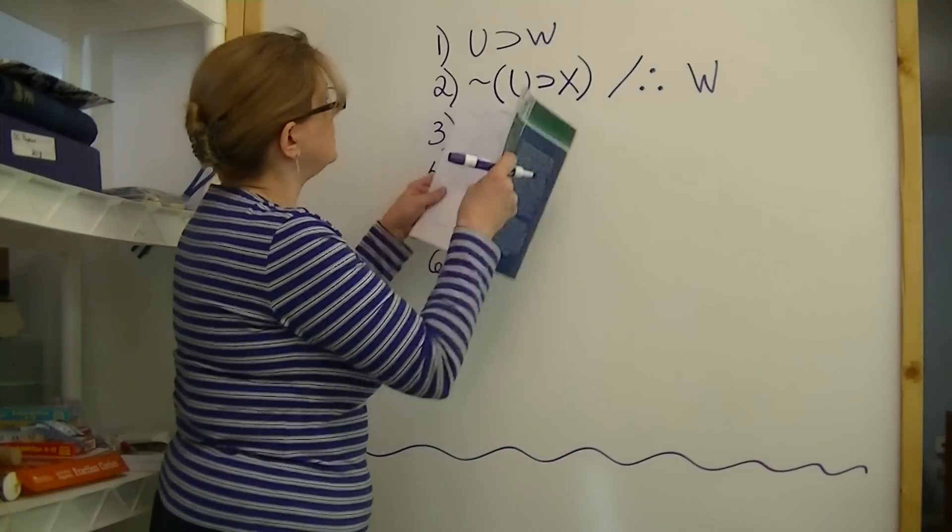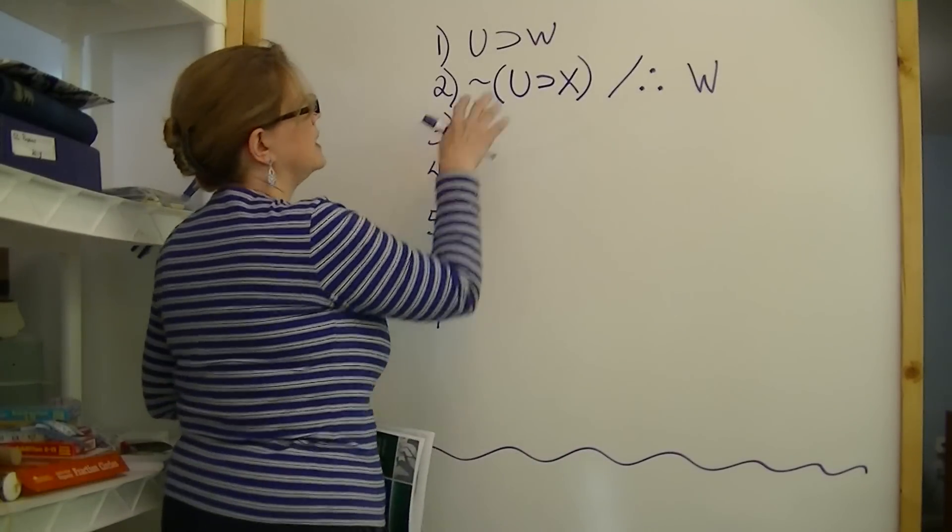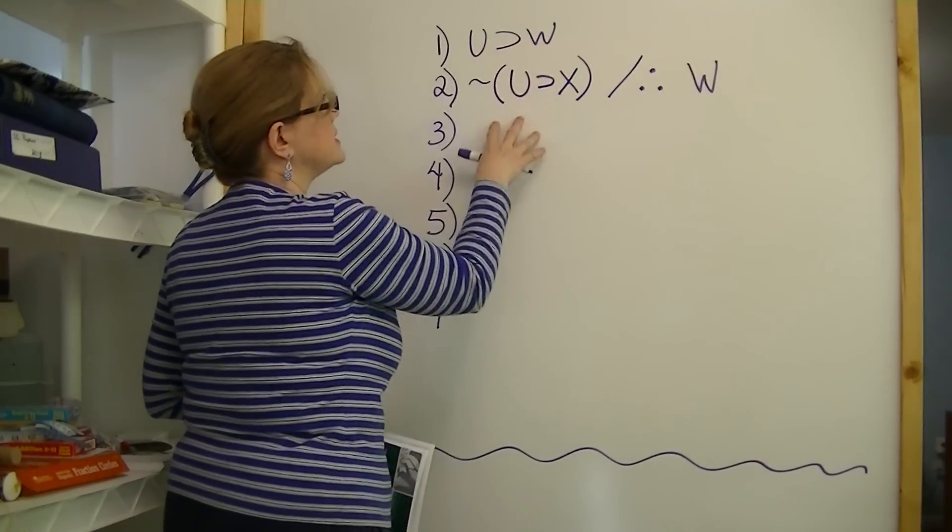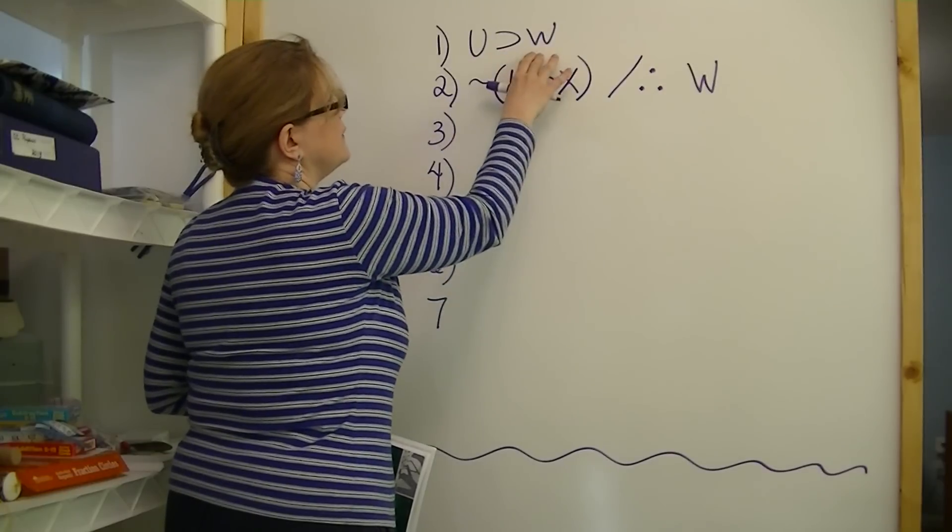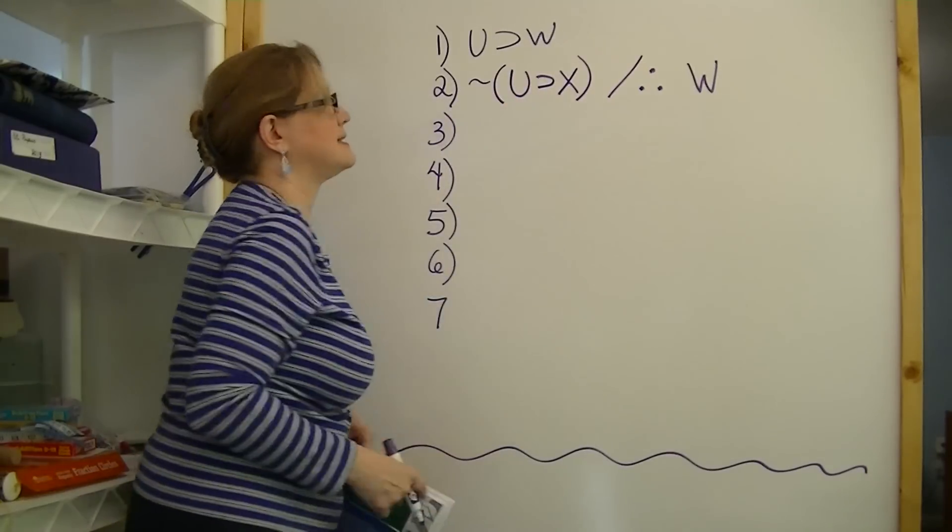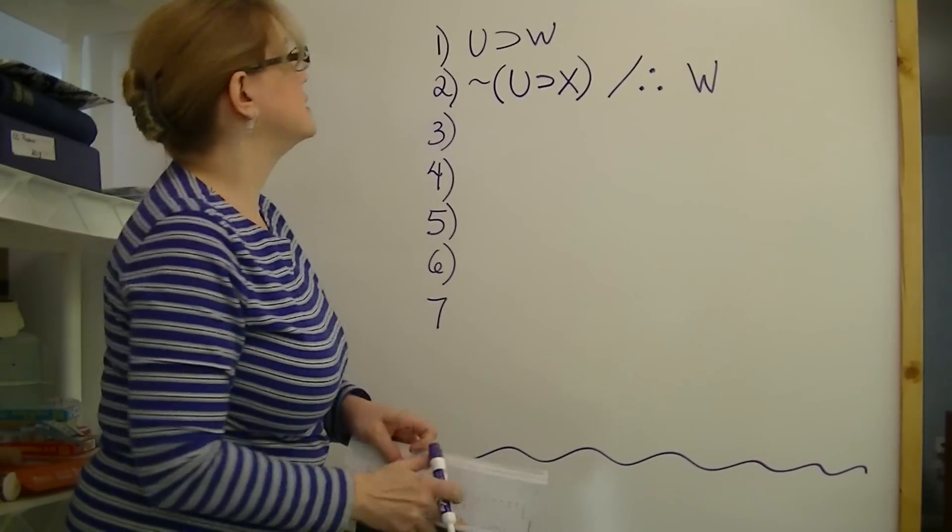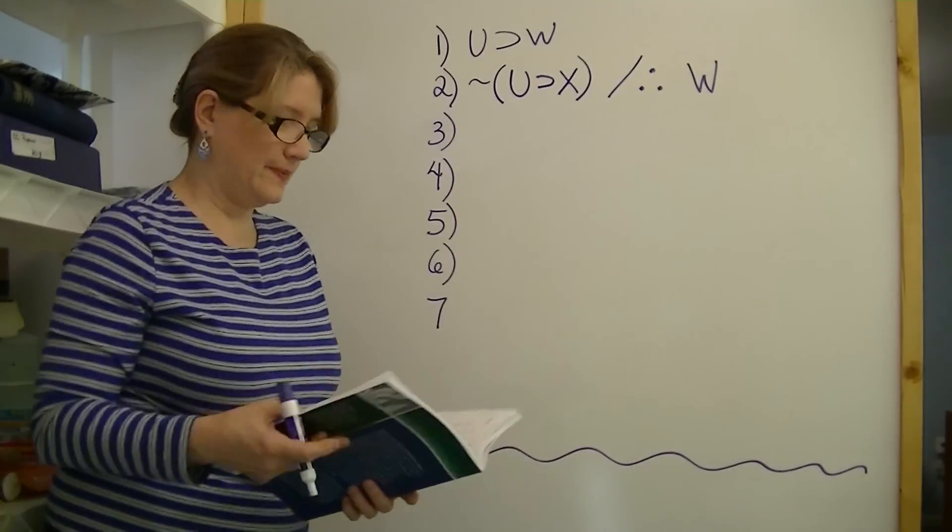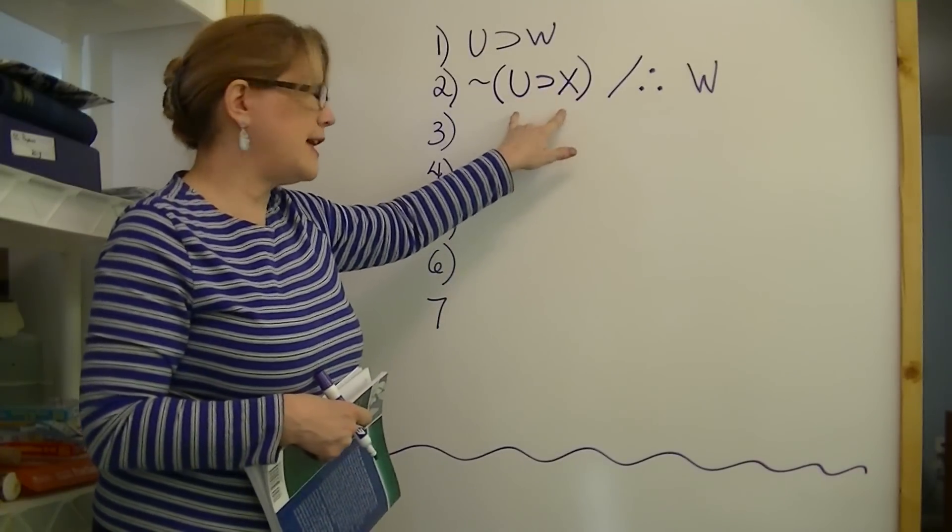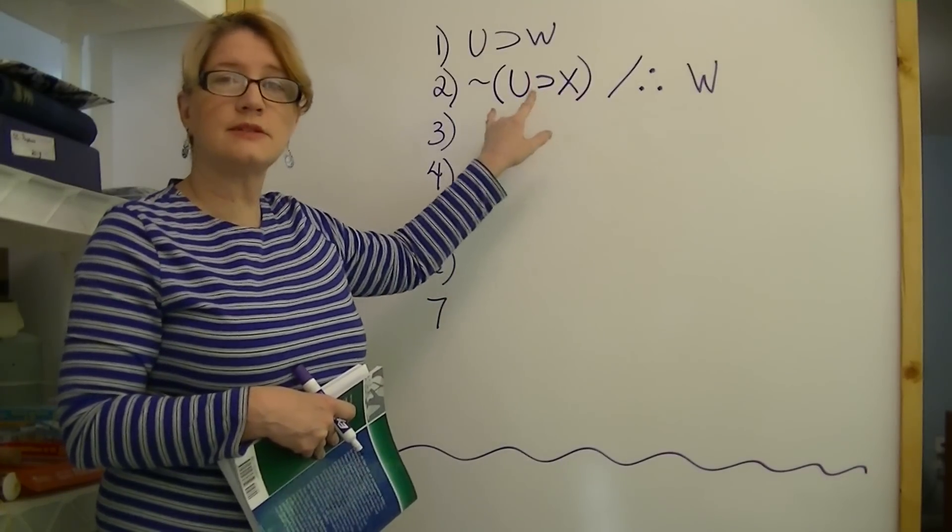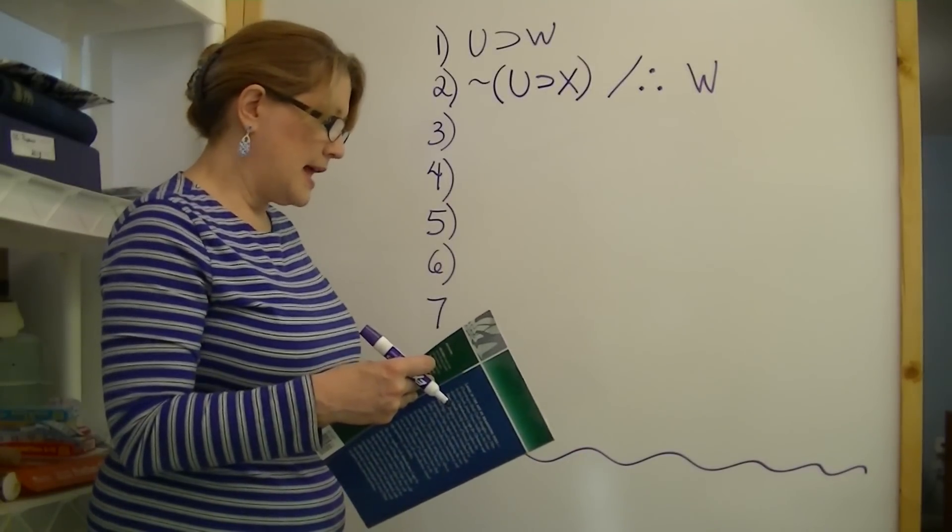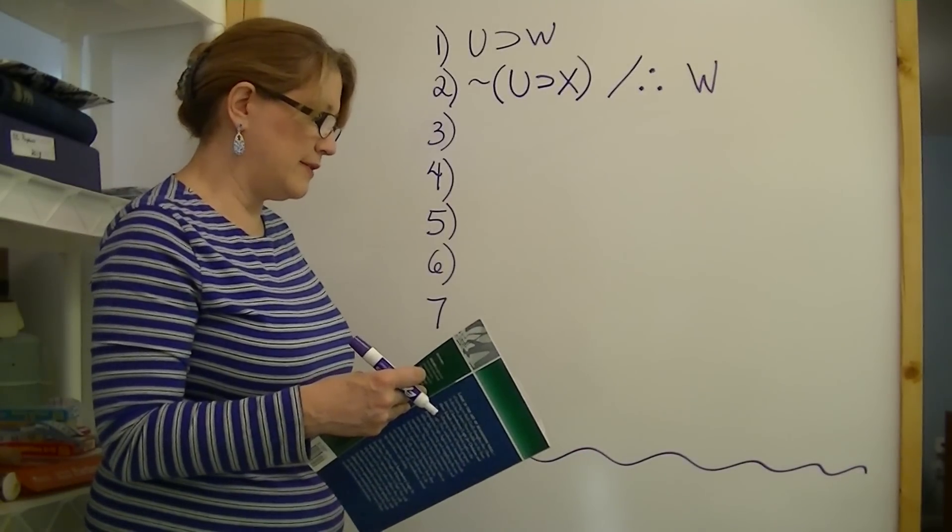So to get U by itself, we can't use the W yet. We can only use the premises we have. So if U then W, and not if U then X. It looks like we're going to have to change one of these. Now we don't want to keep the X, so having it as an if-then is a problem. So let's change that. Let's get rid of our if-then.